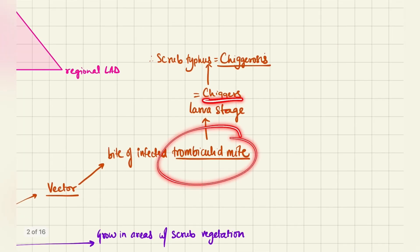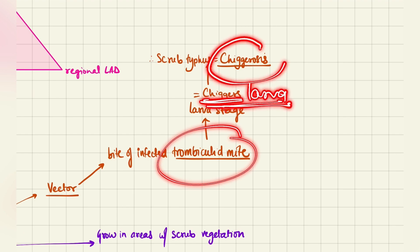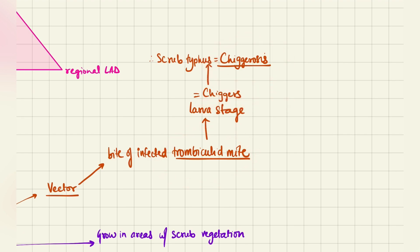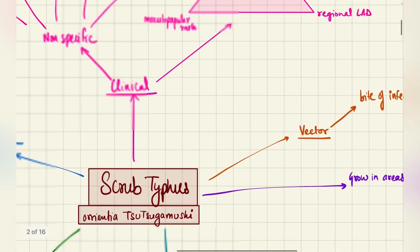Now it is the chigger's larva stage of the trombiculid mite, which is why this scrub typhus is also known as Chiggerosis. So it's the chigger's larva stage of the trombiculid mite, which is why it is called Chiggerosis.